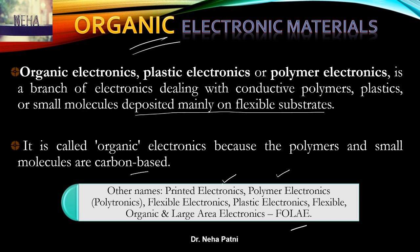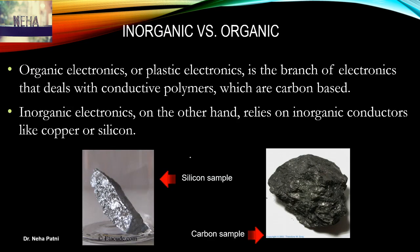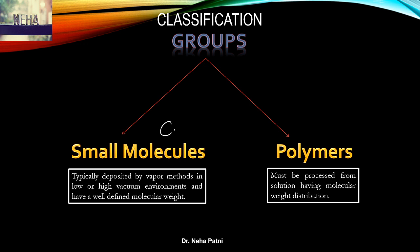It is called organic because the compounds are carbon-based, and they could be small molecules or polymer molecules. Organic is coming into the market because we need to rely on sources other than inorganic. In inorganic electronics it is mostly silicon, which is a trace material and very costly. So we need to find alternatives, and that is what organic electronics is all about.